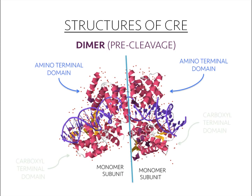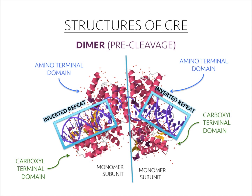The bottom domain is the carboxyl terminal domain, containing nine alpha helices and three beta strands. This domain participates in DNA and inter-subunit interactions, and also contains Cre's active site. Each monomer is bound to half of the LoxP site at the inverted repeats, with the core sequence residing in the middle.